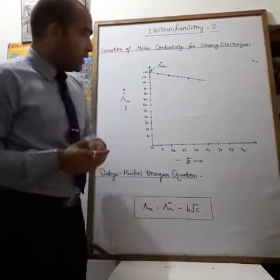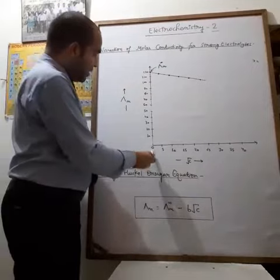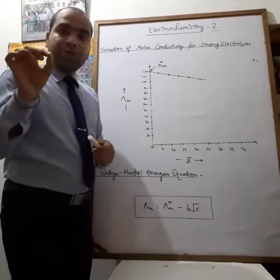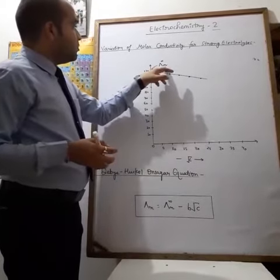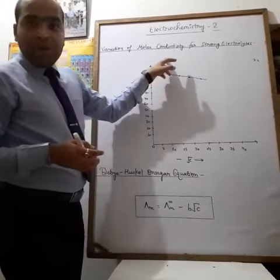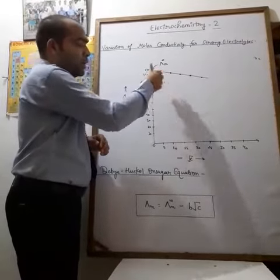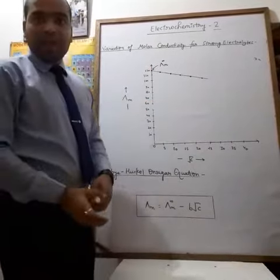to the Y-axis, we will get the value of λM at √C equal to zero. √C equal to zero means the molar conductivity at infinite dilution, which is denoted by λM∞. So for strong electrolytes, the molar conductivity at infinite dilution can be directly obtained from the graph. Thank you.